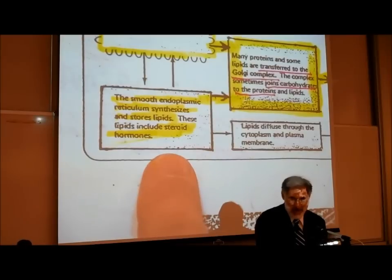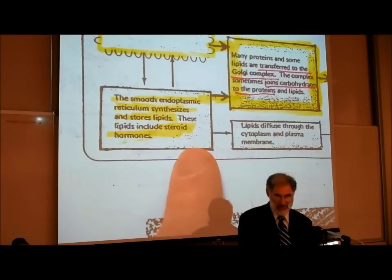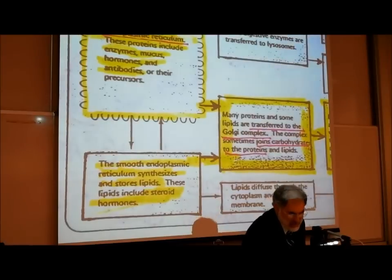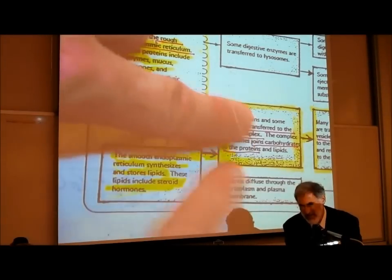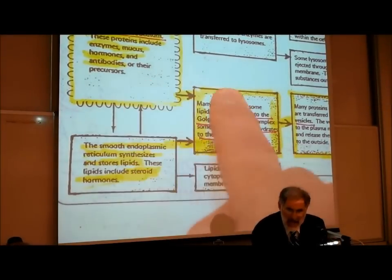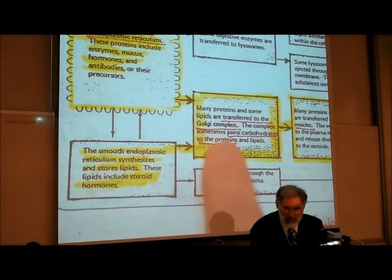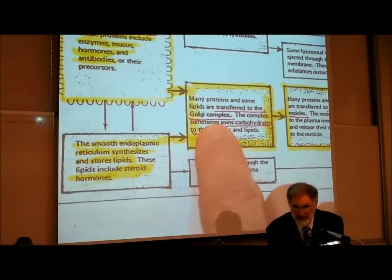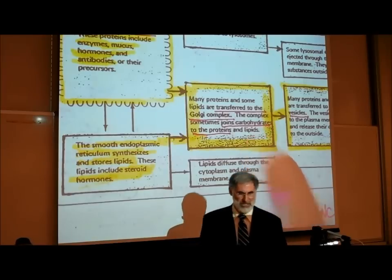The box right below it says: the smooth endoplasmic reticulum synthesizes and stores lipids, including steroid hormones — which is what we learned about the smooth ER. Both boxes have arrows pointing to the middle box of the second column, showing what can happen next after proteins are made in the rough ER or steroid hormones are made in the smooth ER: they can be transferred to the Golgi complex. The Golgi complex sometimes joins carbohydrates to the proteins or to the lipids.